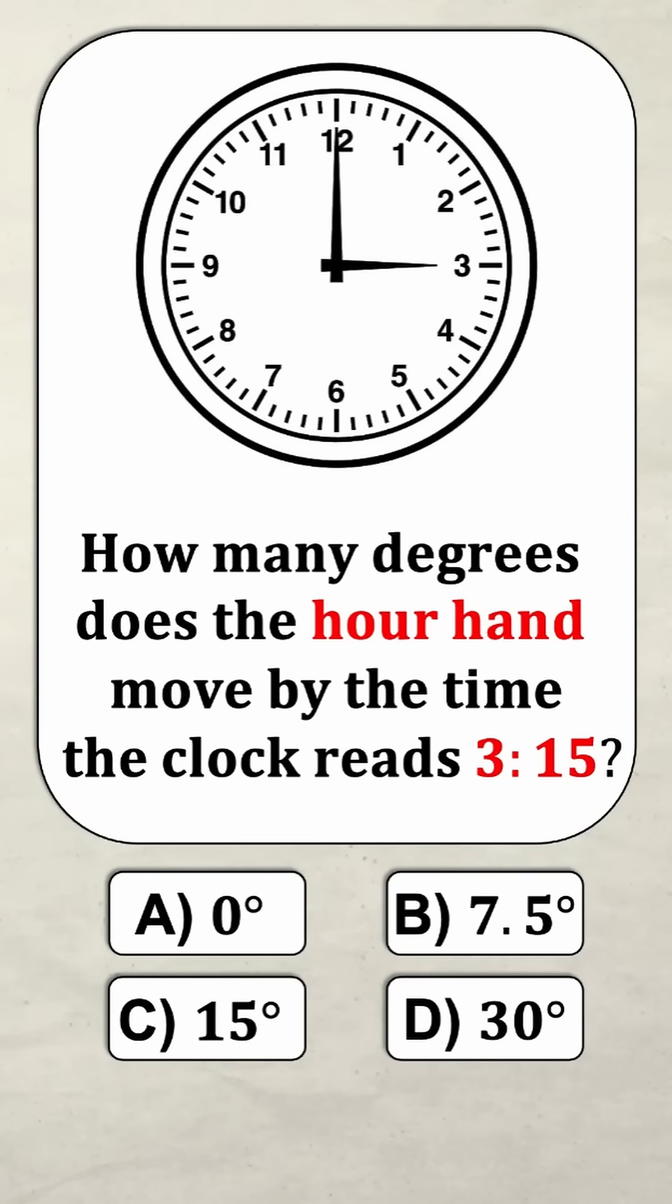Can you solve this problem? The current time is three o'clock and we want to know how many degrees does the hour hand move by the time the clock reads 3:15.